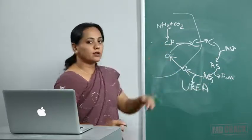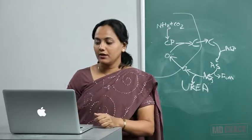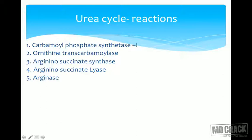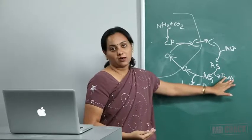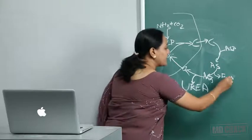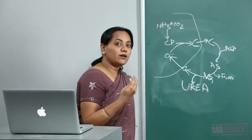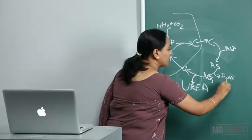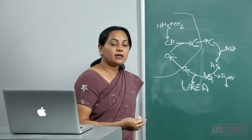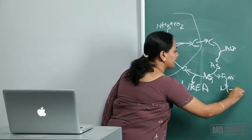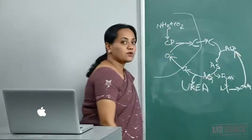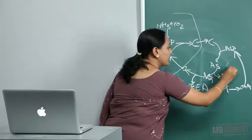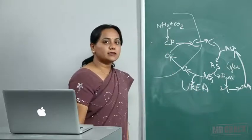Fumarate released by argininosuccinate lyase is an intermediate of the TCA cycle, creating a link between the urea cycle and TCA cycle. Fumarate is converted to malate, malate to oxaloacetate, and oxaloacetate to aspartate — via a transamination reaction where glutamate donates its amino group to oxaloacetate to form aspartate.